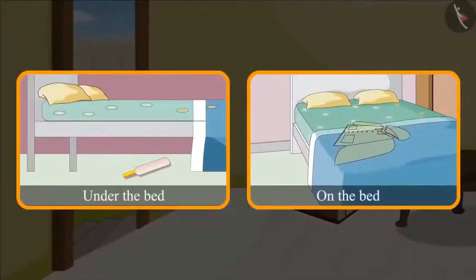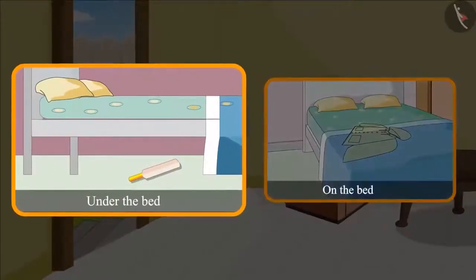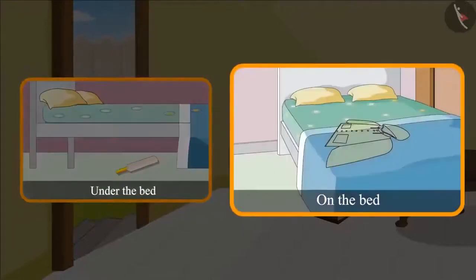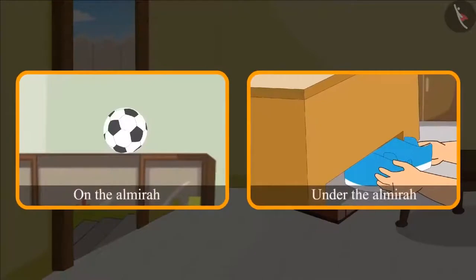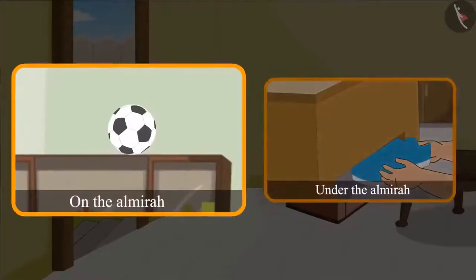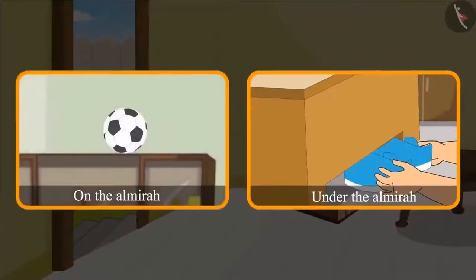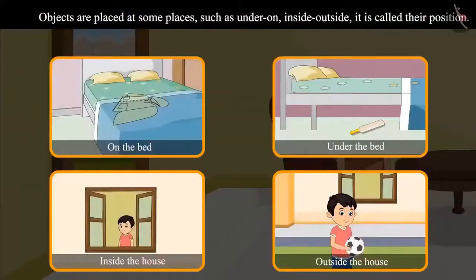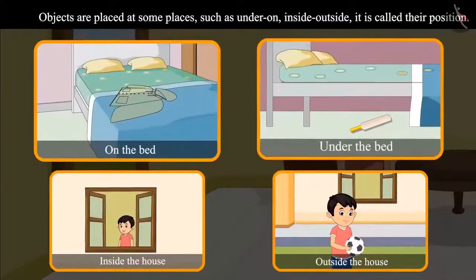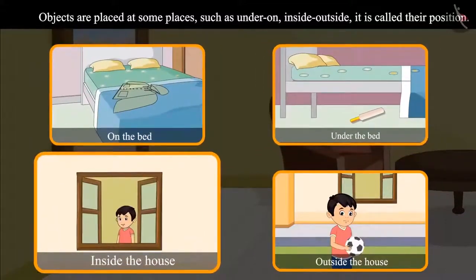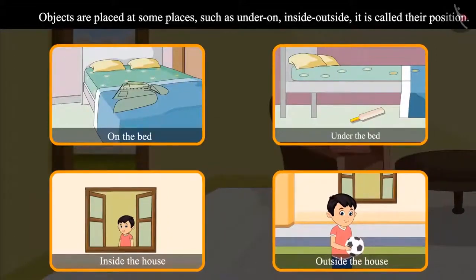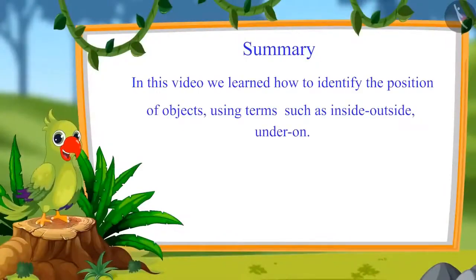Children, did you see where Chotu's bag was kept? Chotu's bag was kept under the bed and his raincoat was kept on the bed. His mother took the ball from the top of the almira and Chotu's shoes were under the almira. So children, we have seen that objects are kept at certain places and words such as under, inside, and outside are used to exactly tell us their position.